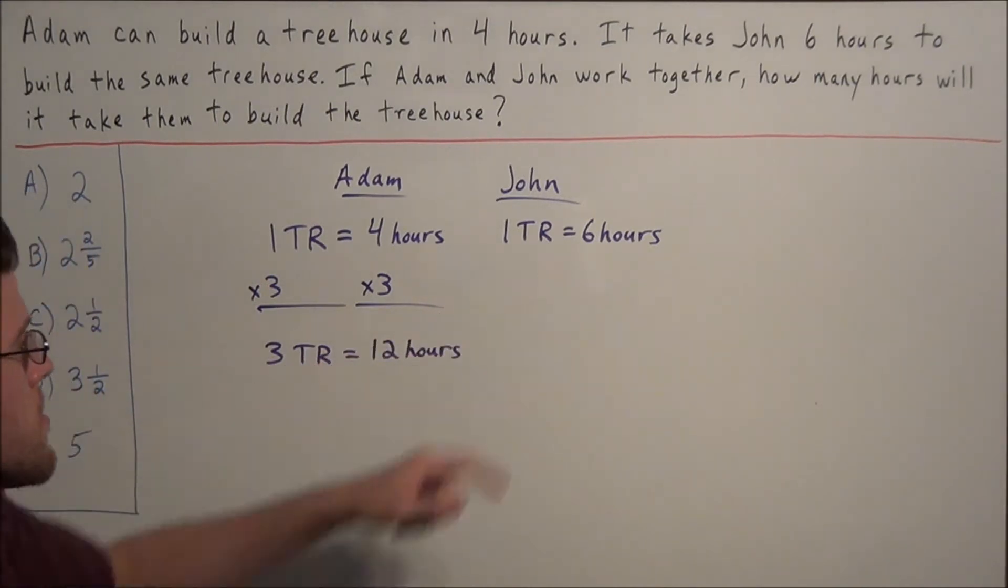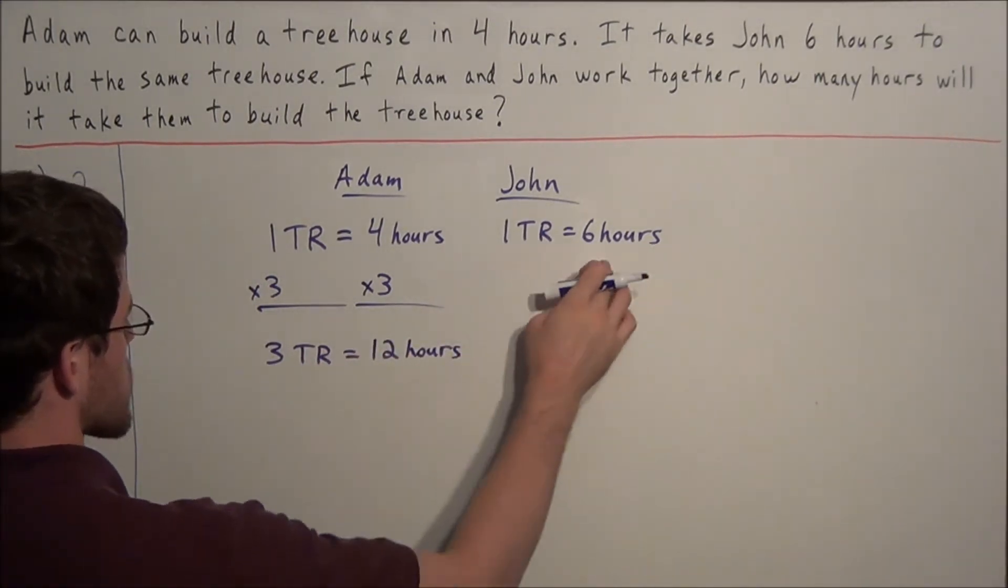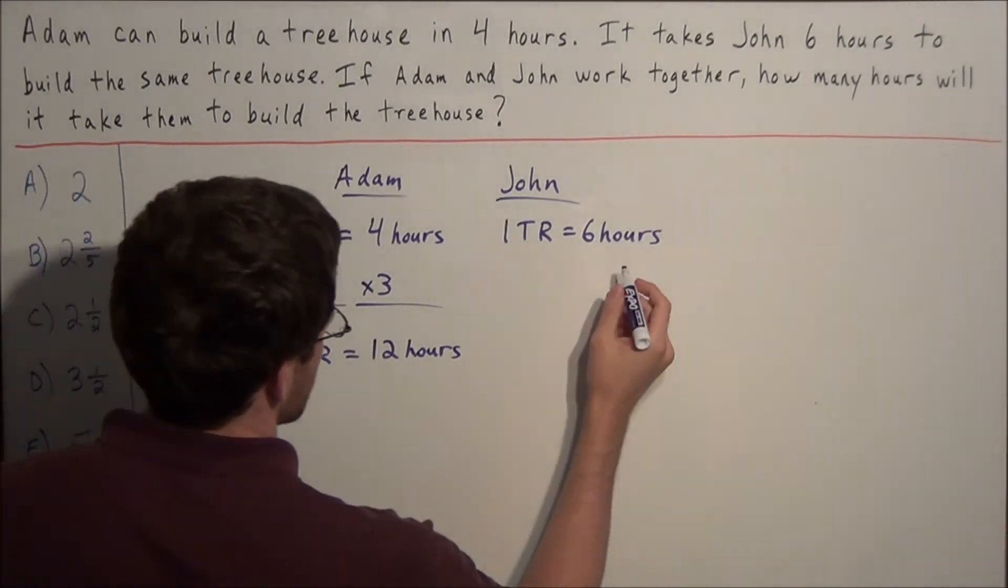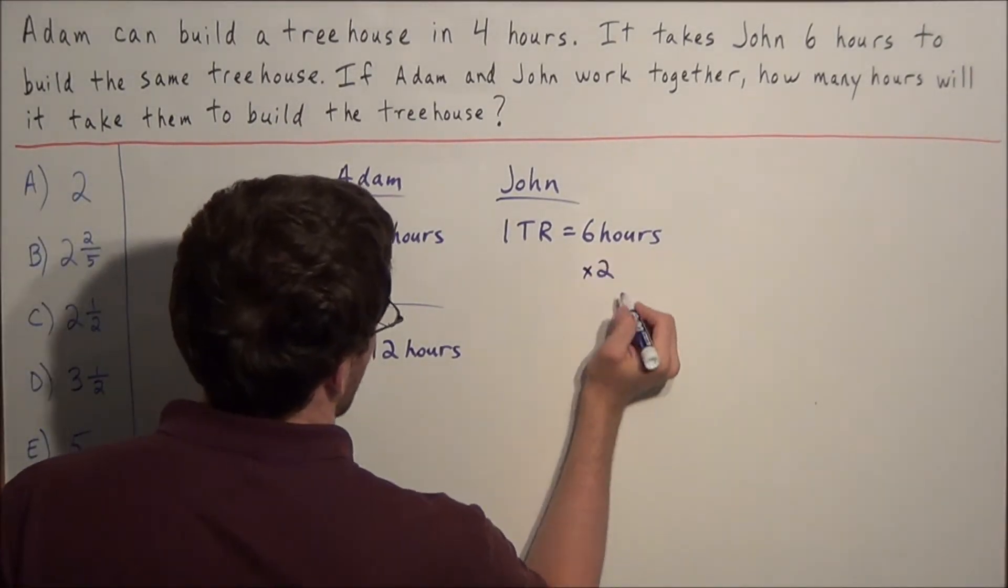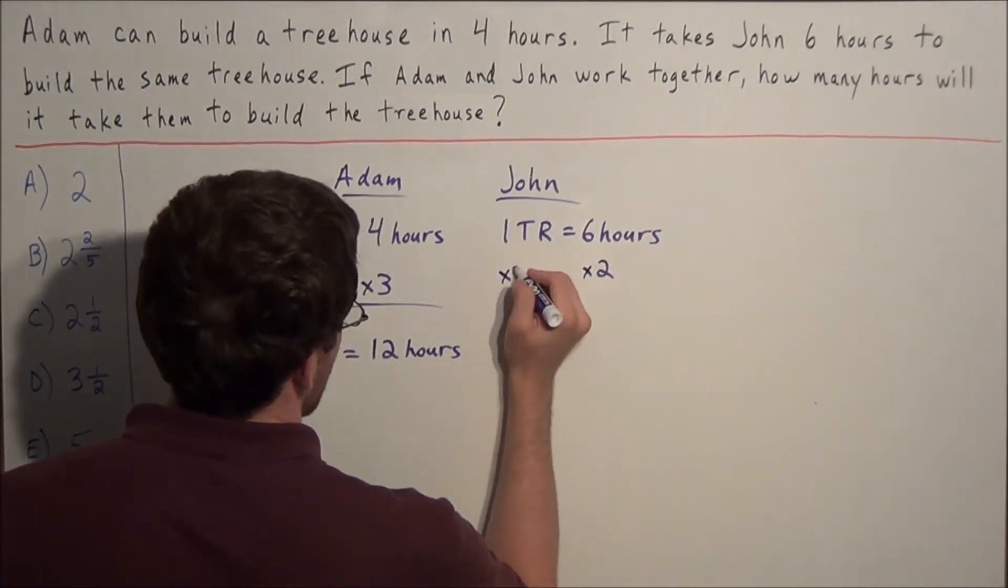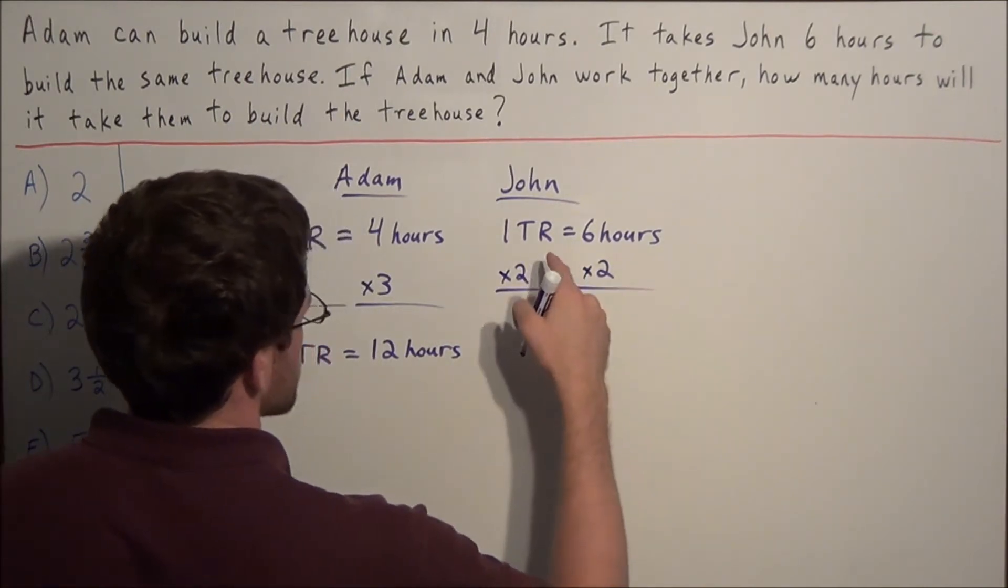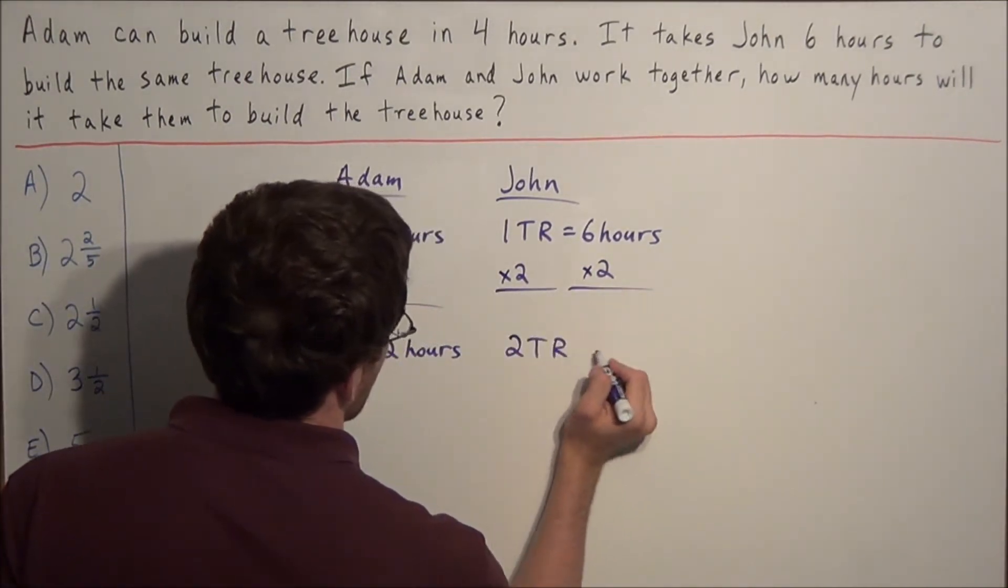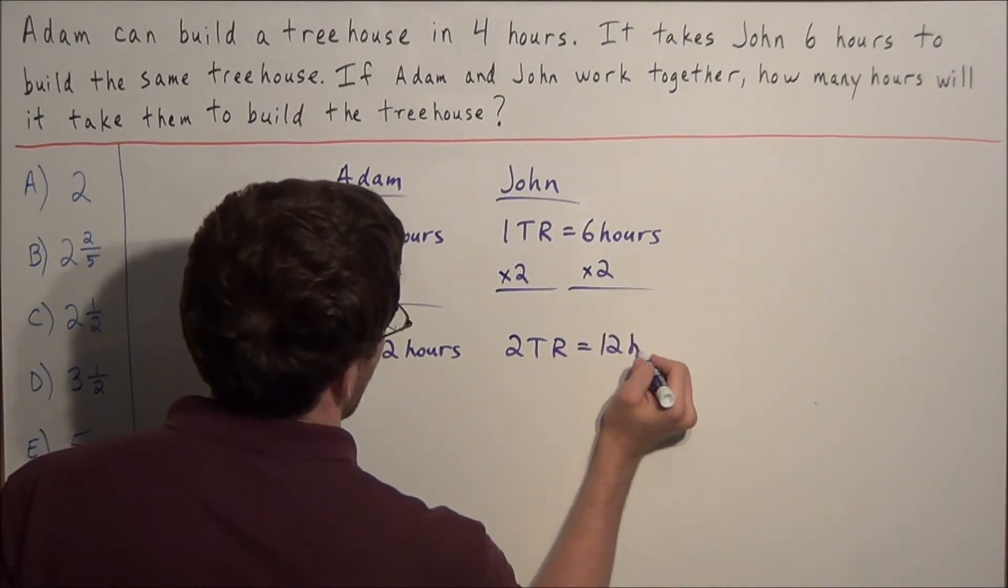So now we do something similar for John, but we want this time to match twelve hours. So we're going to multiply six by two and do the same thing on the left hand side. This tells us that John can build two treehouses in twelve hours.